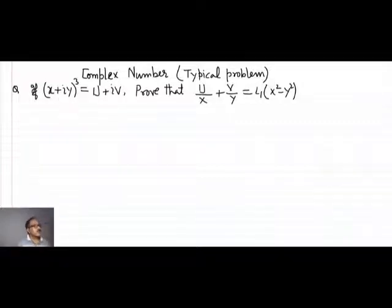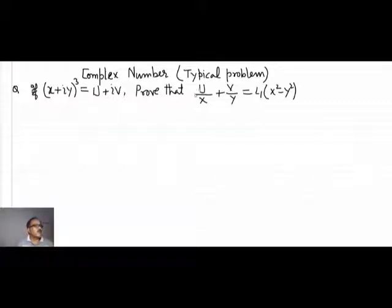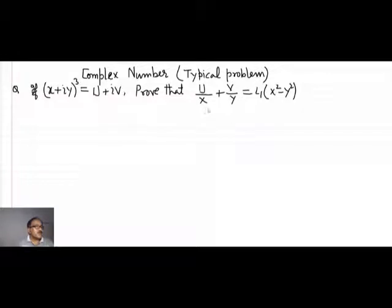Hello students. Today we will see another typical problem connected with complex numbers. The problem is: if (x + iy)³ = u + iv, then prove that u/x + v/y = 4(x² - y²). For such type of questions, we should pay attention to the given part.